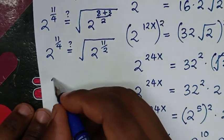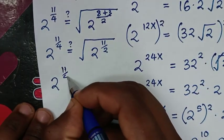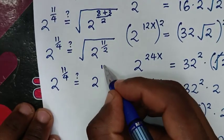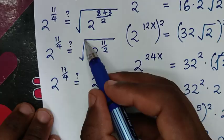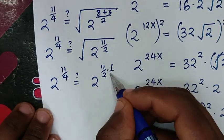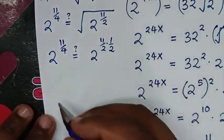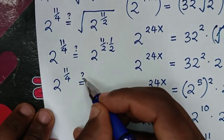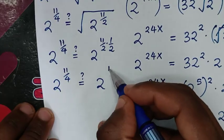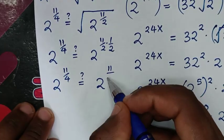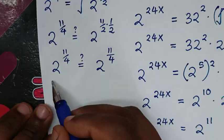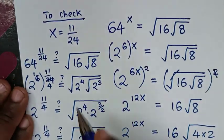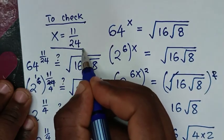In the next step, 2^(12x) equals 2^(11/2), and the square root is the same as a power of one-half. So we multiply: 2^(11/2 times 1/2) equals 2^(11/4). The left side is also 2^(11/4), so the left side and right side are equal. This confirms that x equals 11 over 24 is correct.